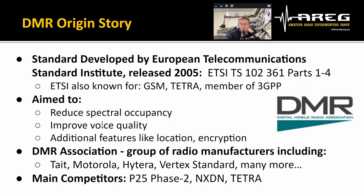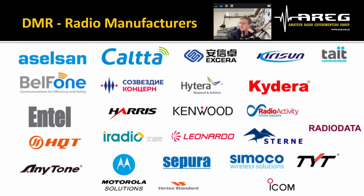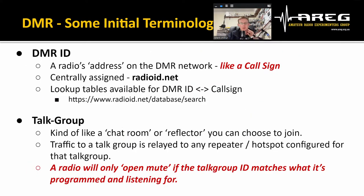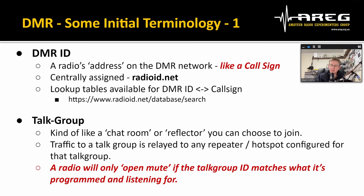The aims for DMR were to reduce spectral occupancy, improve voice quality, and add additional features such as sending data along with voice — location information — and allow for encryption. DMR was developed by ETSI, adopted by many manufacturers, and there's now a DMR Association with many manufacturers involved. A DMR ID is your radio's address on the DMR network — think of it as your call sign. It's a number centrally assigned for amateur radio DMR by radioid.net, with a lookup table you can download.